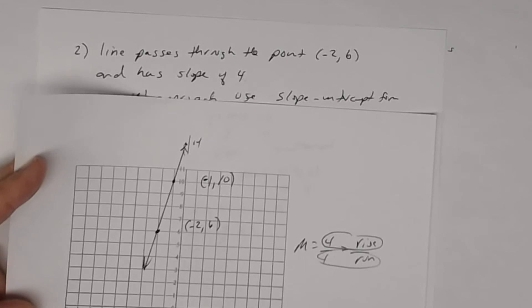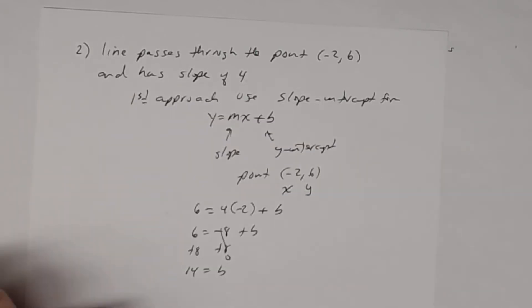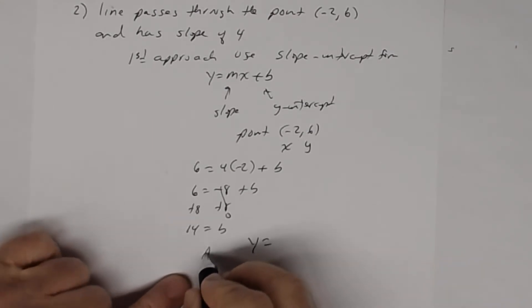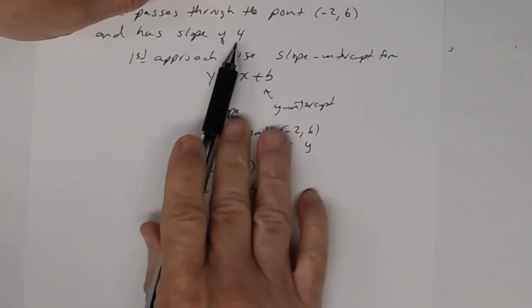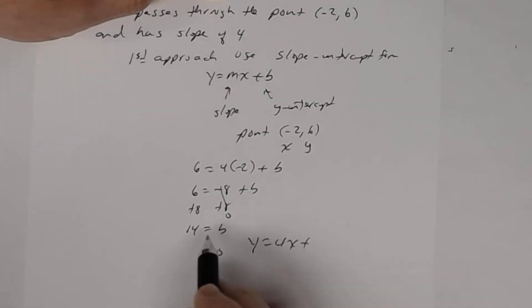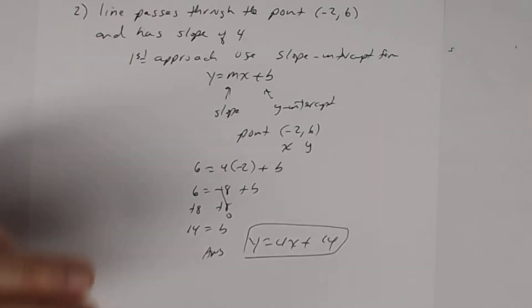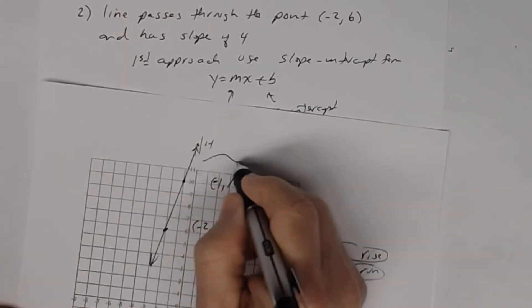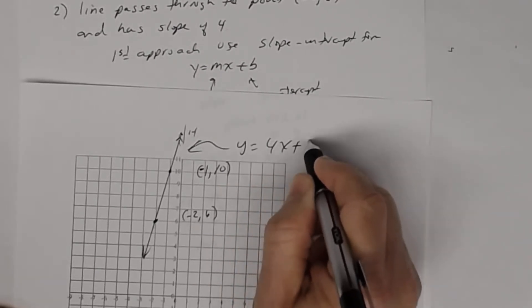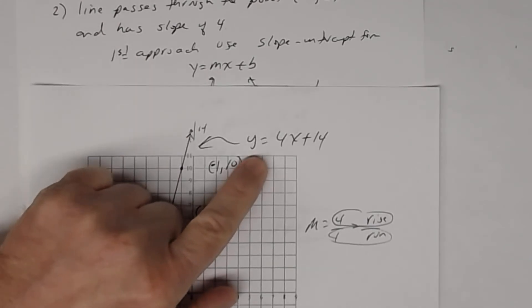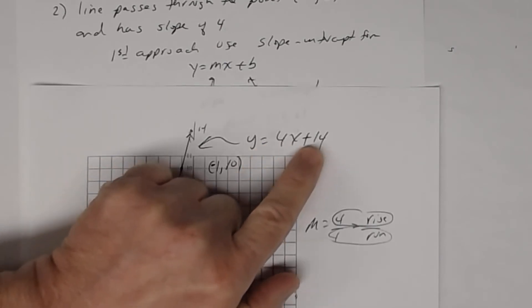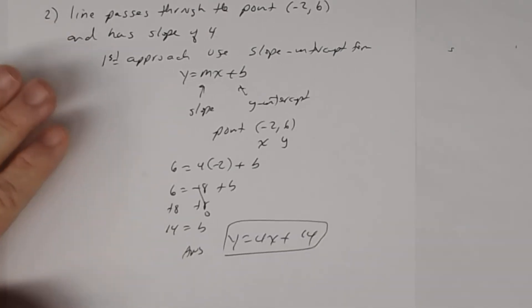The y-intercept is 14, so the answer is y equals 4x plus 14. That is the equation of this line — slope is 4 and the y-intercept is 14, meaning the graph crosses the y-axis at 14.